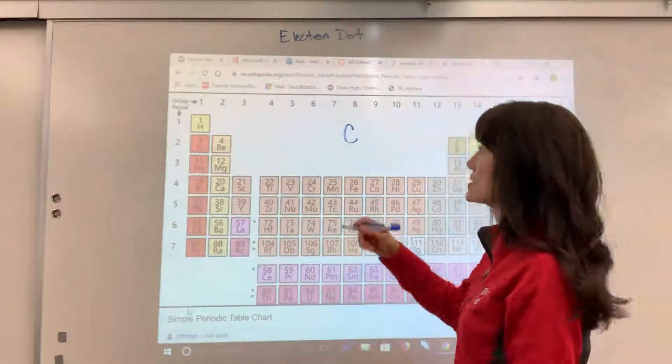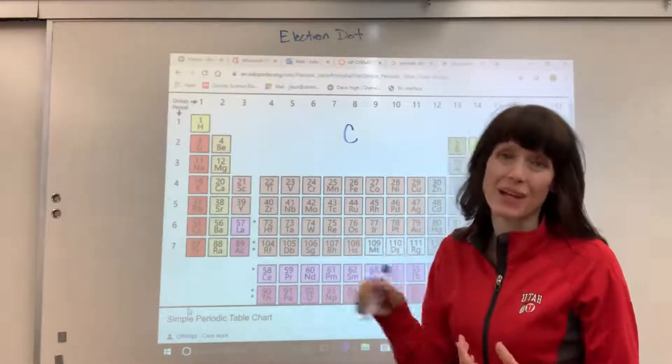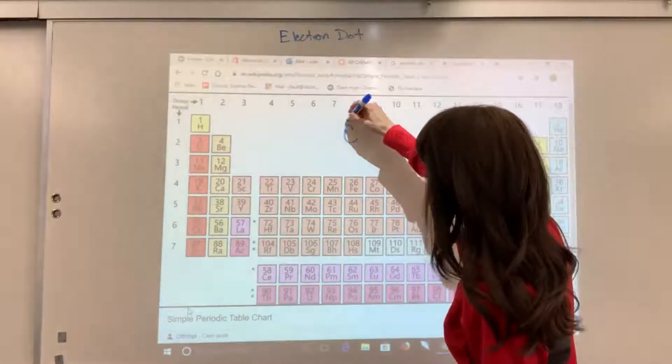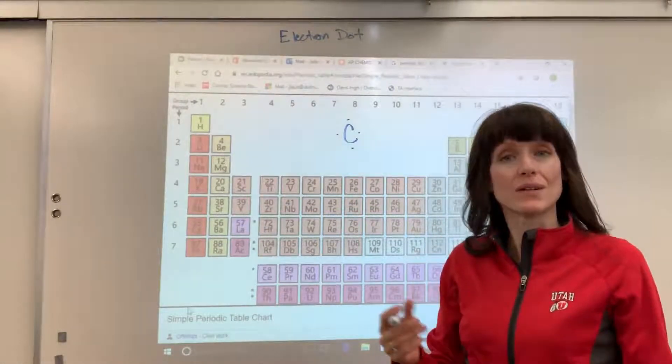So I've got four valence electrons. It doesn't matter where you start. Just out of habit, I start at the top and I go clockwise. So one, two, three, four. There is the electron dot for carbon.